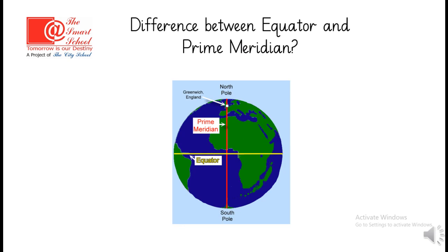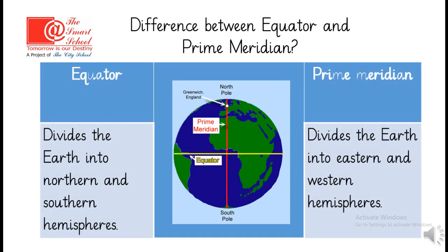As you know the equator and the prime meridian, let's see the difference between them. The equator divides the earth into northern and southern hemispheres. However, prime meridian divides the earth into eastern and western hemisphere. This is eastern hemisphere and this is western hemisphere.